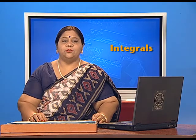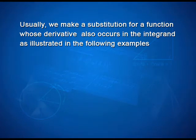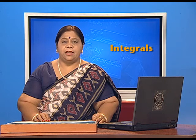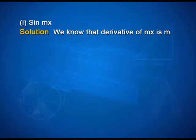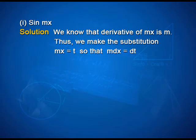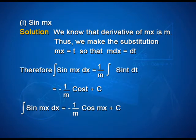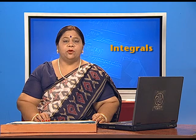It is often important to guess what will be the useful substitution. Usually, we make a substitution for a function whose derivative also occurs in the integrand, as illustrated in the following examples. Integrate sin mx with respect to x. For integrating sin mx, we know that the derivative of mx is m. Thus, we make the substitution mx = t, so that m dx = dt. Therefore, integral of sin mx dx is equal to (1/m) ∫sin t dt, that is equal to −(1/m) cos t + c. Therefore, ∫sin mx dx = −(1/m) cos mx + c, where c is the constant of integration.